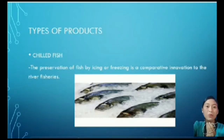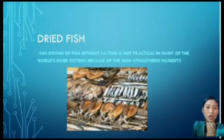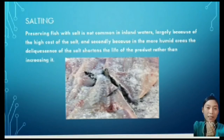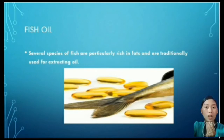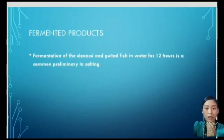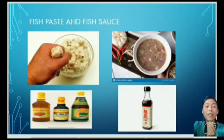There are several types of fish products in lake and river fisheries. Chilled fish: preservation by icing or freezing is a comparative innovation to river fisheries. Dried fish: sun drying without salting is not practical in many river systems due to high atmospheric humidity. Salting: preserving fish with salt is not common in inland waters, largely because of the high cost of salt. Smoking: smoke drying is perhaps the most widespread way of preserving fish, practiced in nearly all river systems and lakes in Africa. Fish oil: several species rich in fats are traditionally used for extracting oil. Fermented products: fermentation of cleaned fish in water for 12 hours is a common preliminary to salting, and in Asia, fermented products including fish paste and sauce with high salt content are also produced.